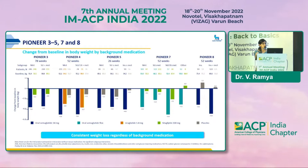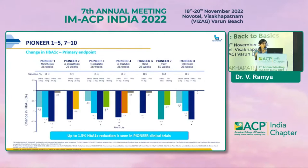This blue bar representing oral semaglutide shows consistent weight loss across all trials — Pioneer 3, 4, 5, and 6 — irrespective of the background medication, with sustained weight loss. The change in HbA1c across all the series is up to 1.5%.